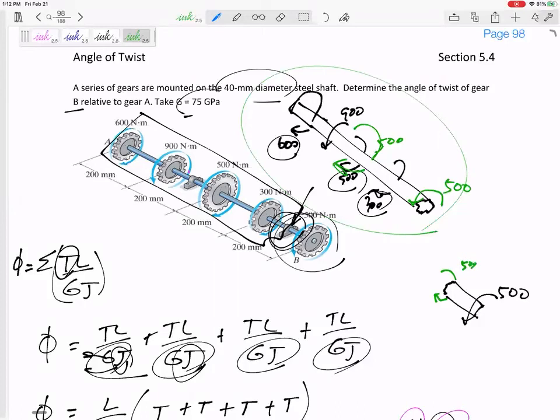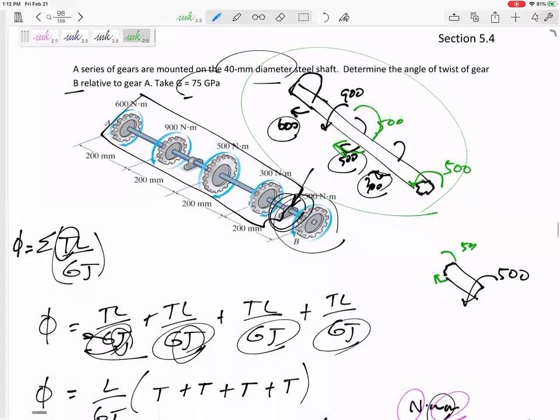Do y'all see, and we kind of did a little bit of this in dynamics. Do you see why that's an internal torque? One side feels equal and opposite what the other side feels. So when we have that whole piece together, we don't draw any torque in between here. It's only when you open it, when you cut it and open it, that you see that internal torque of 500.